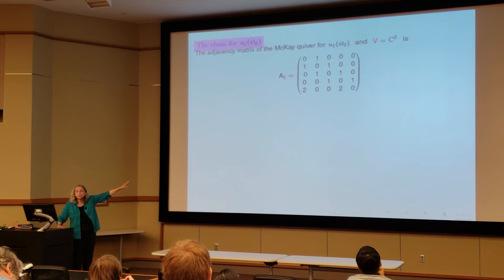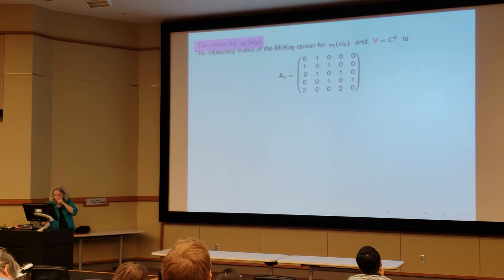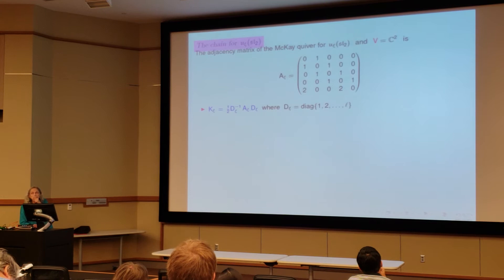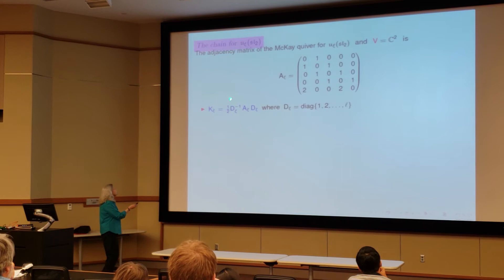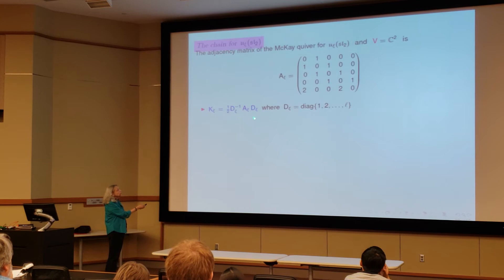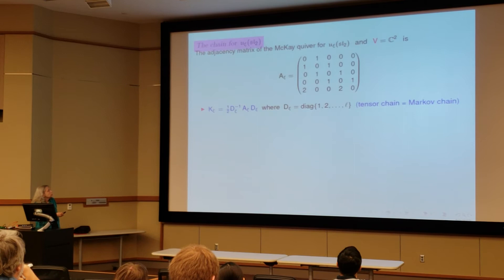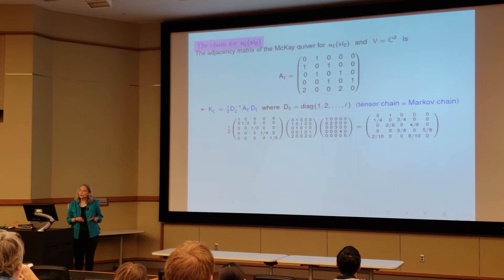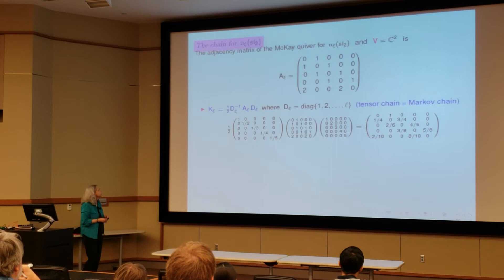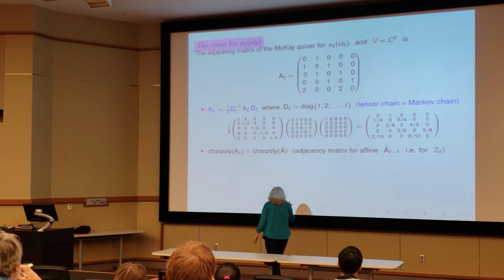So I wrote down the adjacency matrix in the case of a fifth root of unity. Again, the probability matrix is just one over the dimension of what I'm tensoring with, the diagonal matrix and this adjacency matrix. So these are the dimensions of the symbols. There is quantum loop one up to L. So these matrices were supposed to be the same size, but because of the fractions, they're going to be distorted.